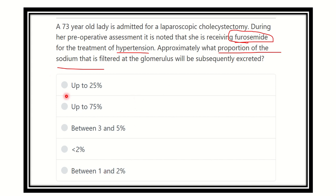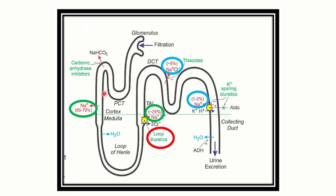To answer this, we need to know details about the nephron and the absorption of sodium in its different parts. Here we can see a complete nephron: the glomerulus, then the proximal convoluted tubule, the loop of Henle, the thick ascending limb of the loop of Henle, then the distal convoluted tubule, and the collecting duct. This is the normal pathway of fluid flow through the nephron.